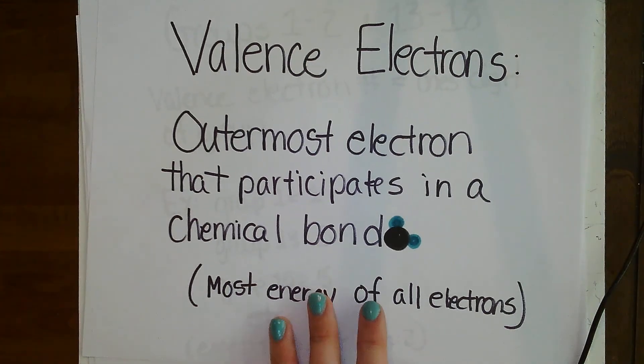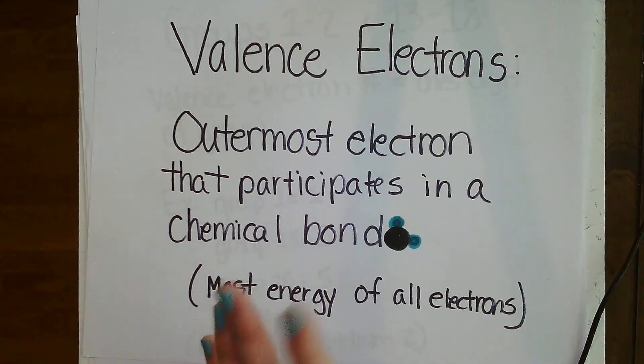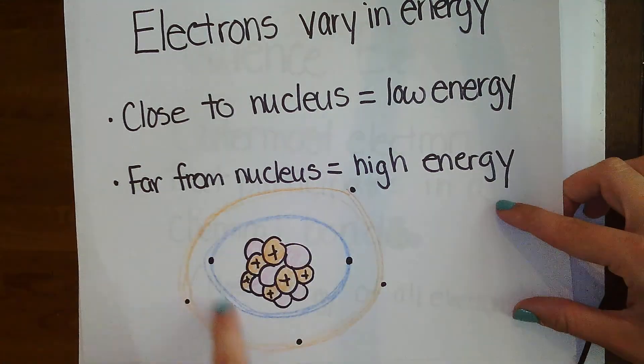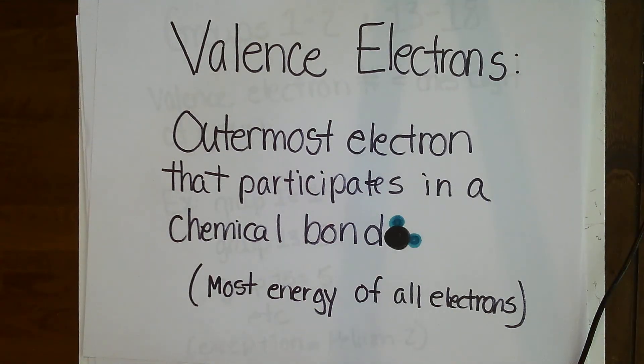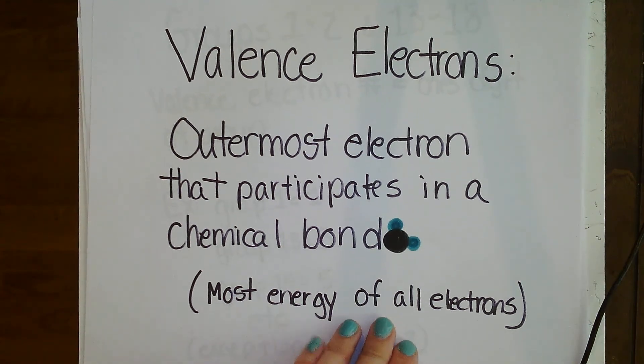This is where we get into valence electrons. Valence electrons are the outermost electrons that participate in chemical bonds. These outside valence electrons, we're talking about electrons that look like this on the outer ring. Those are the electrons that have the most energy within the entire atom, and those are the ones that are going to form the chemical bonds.